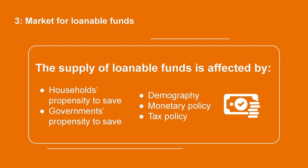The supply of loanable funds is affected by many factors. The most important are the propensity to save of households and states. Demography also plays a role, as older people usually have more savings than younger people. Monetary policy, by expanding the money supply, can increase the amount of loanable funds. Tax policy can shift the propensity to save, for instance by providing incentives to save or invest.